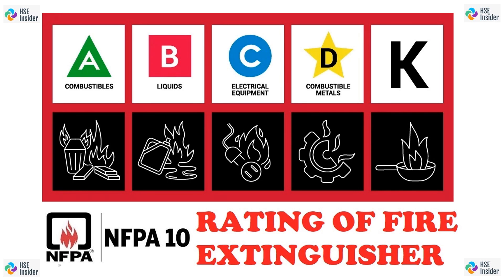For instance, a 10B rating means the fire extinguisher can cover a flammable liquid fire of up to 10 square feet, and a 20B rating would indicate it can cover a larger area of up to 20 square feet. Higher numbers denote greater coverage area for Class B fires. For example, a fire extinguisher with a 20B rating can effectively cover a Class B fire involving flammable liquids over an area of up to 20 square feet.